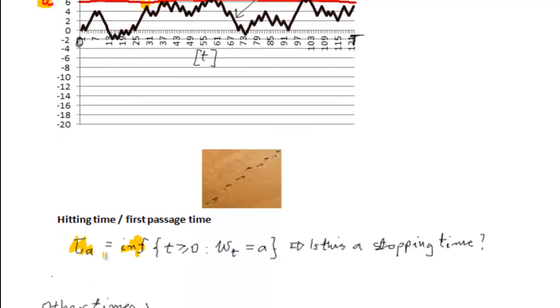So the question is, we've got a definition here of hitting time which is defined as the first time that our random process is equal to level A. And the question is obviously, is this a stopping time?